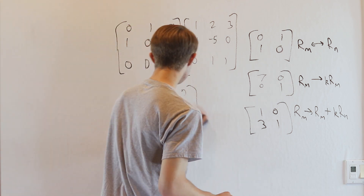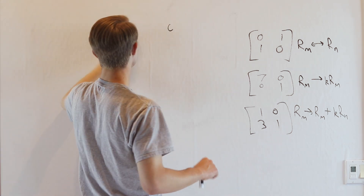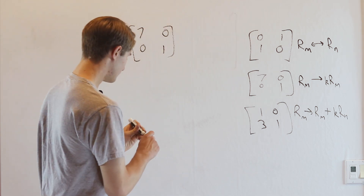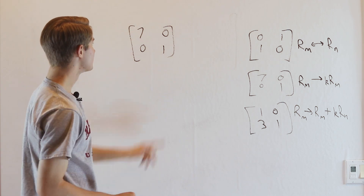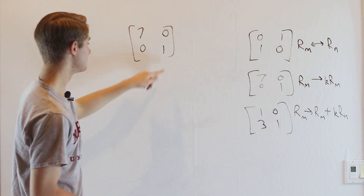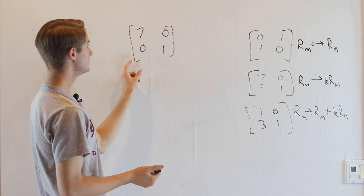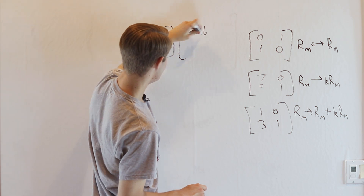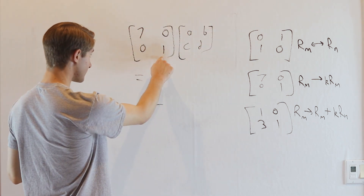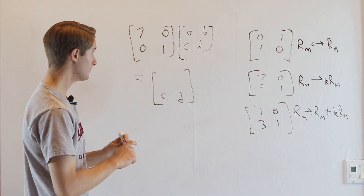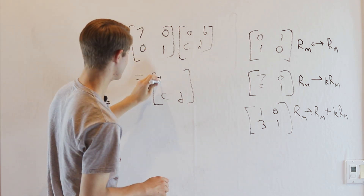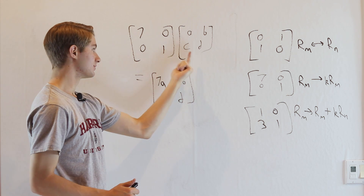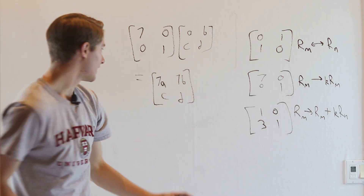Now let's look at the next type: multiplying one of the rows by a constant. In the matrix [[7, 0], [0, 1]], the 1 says second row inputs go to second row outputs at the same magnitude. But the 7 says first row inputs go to first row outputs at 7 times the magnitude. So multiplying by [[A, B], [C, D]], the second row stays C, D, but A becomes 7A and B becomes 7B in the first row — the same effect as multiplying the top row by 7.